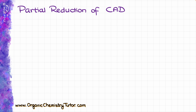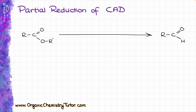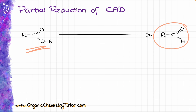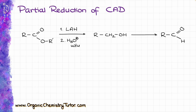Finally, we have the partial reduction of carboxylic acid derivatives. Typically, what I see most students do when they need to convert a carboxylic acid into a corresponding aldehyde is to first completely reduce the carboxylic acid to the corresponding alcohol, and then oxidize that alcohol with something like PCC or Swern to get the corresponding aldehyde. And while this is a fine sequence and it gets the job done, it's far from efficient.